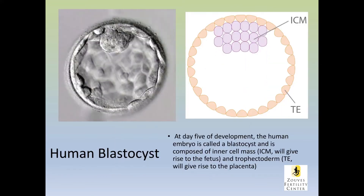Here is a human blastocyst on day five, and you can see it has a central cavity. It has a mass of cells up at 12 o'clock, which is the inner cell mass that makes the baby, and then the cells all the way around the periphery will go to make the placenta.